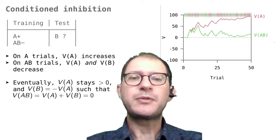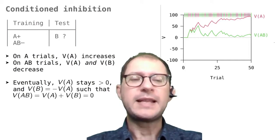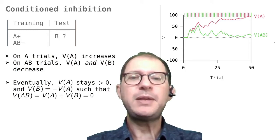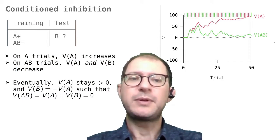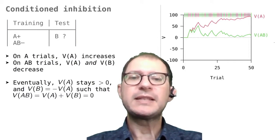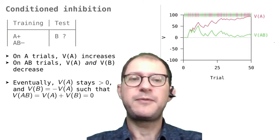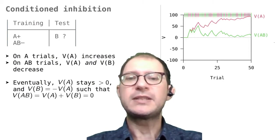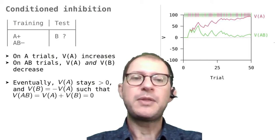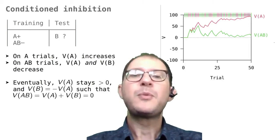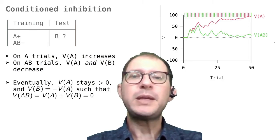In this case, the progressive separation of the two lines happens because V(AB) goes down on AB trials more than it goes up on A trials. Because AB trials decrease two associative strengths, V(A) and V(B), while A trials only increase V(A). So overall, AB is dragged more down than up, and A more up than down.